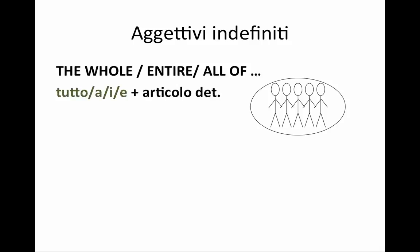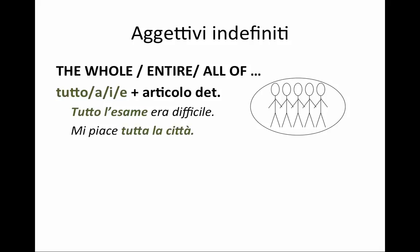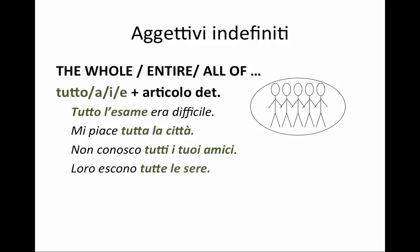The next group indicates all of the group — the entire, the whole — and that is tutto in different forms depending on the noun that follows. For example, 'tutto l'esame era difficile' — all of the exam, the entire exam was difficult, not just some parts of it. 'Mi piace tutta la città' — I like all of the city, the entire city. 'Non conosco tutti i tuoi amici' — I don't know all of your friends. 'Loro escono tutte le sere.' Notice that tutto as an adjective is always followed by a definite article and then a noun, and the form of tutto must reflect that noun in number and gender.